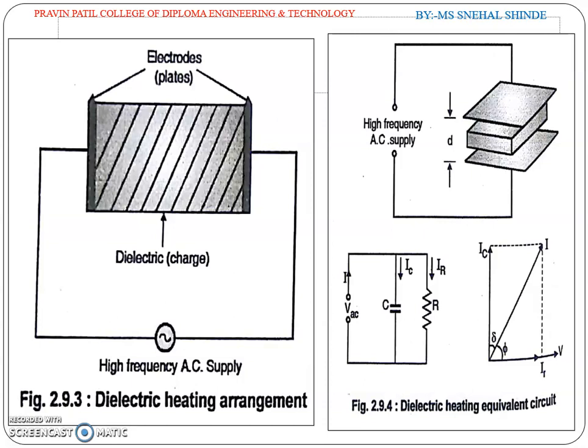The value of electric field applied should always be less than the breakdown value. The dielectric is also known as high frequency capacitance heating. The dielectric loss taking place in insulating material is analogous to hysteresis loss taking place in magnetic material. Hence it is called dielectric hysteresis.